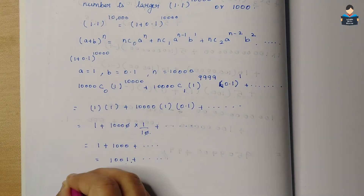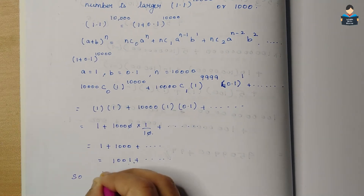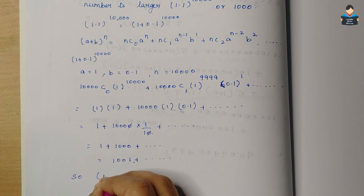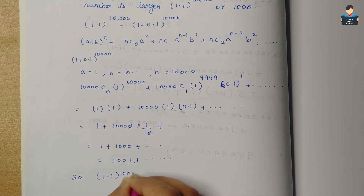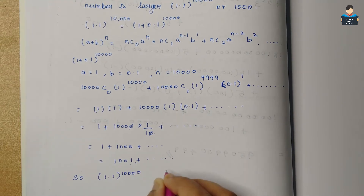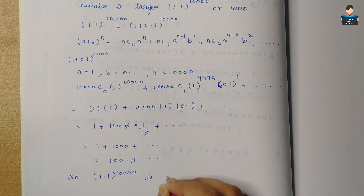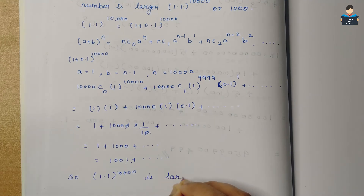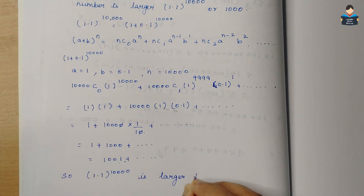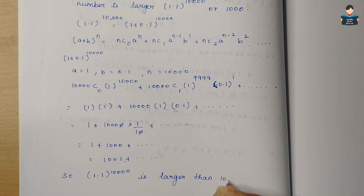So 1.1 to the power 10,000 is larger than 1000. This is our answer for the 10th sum.